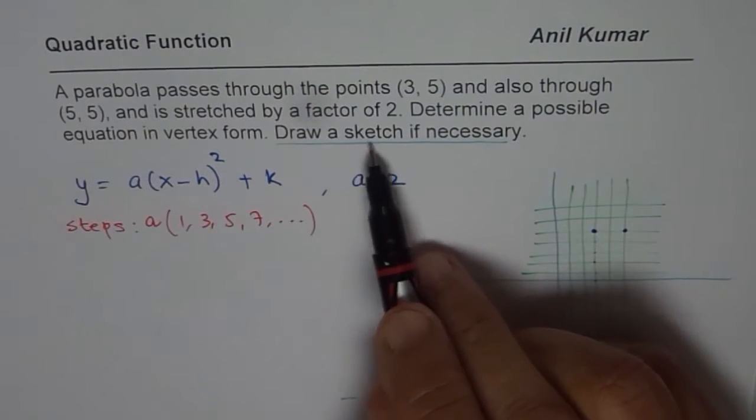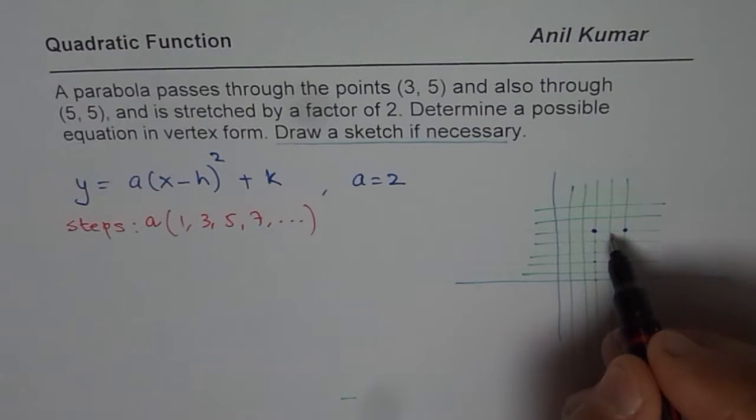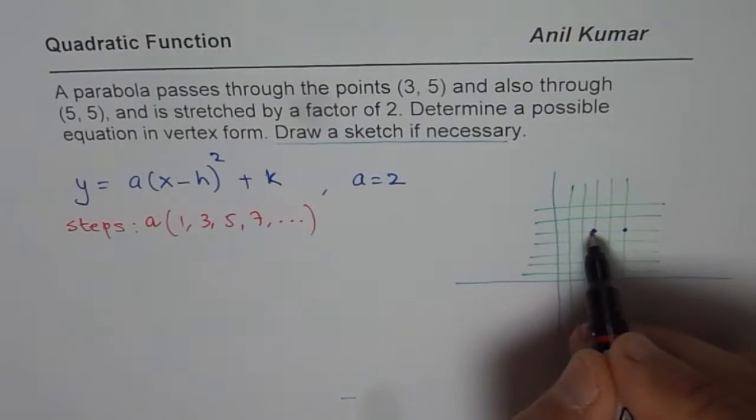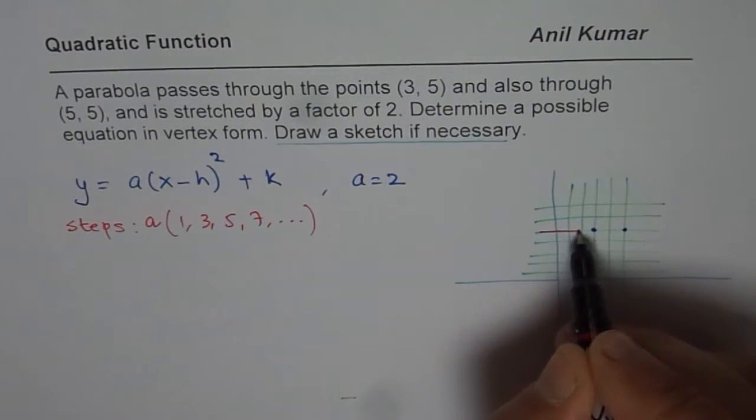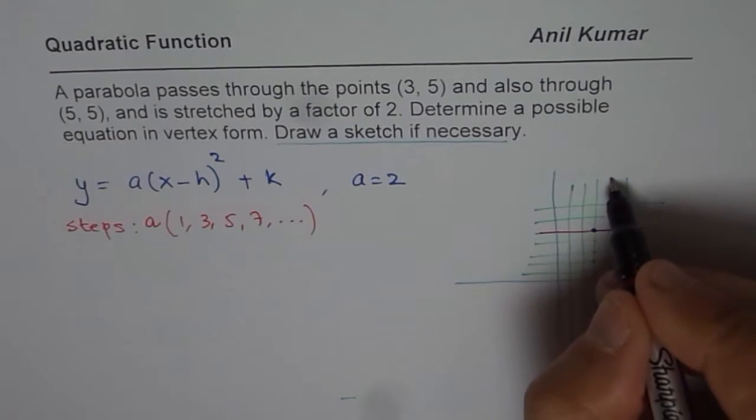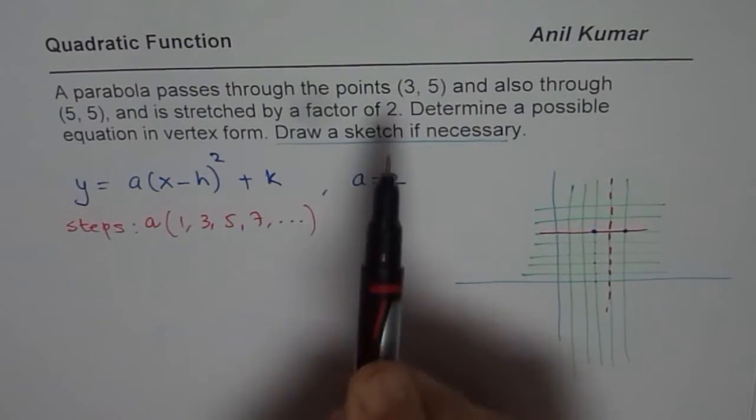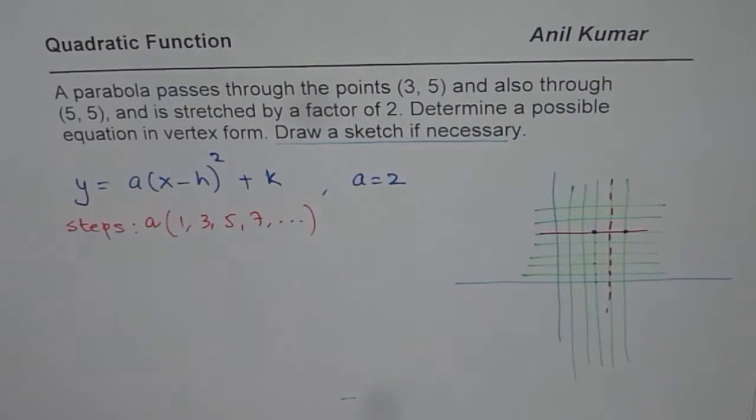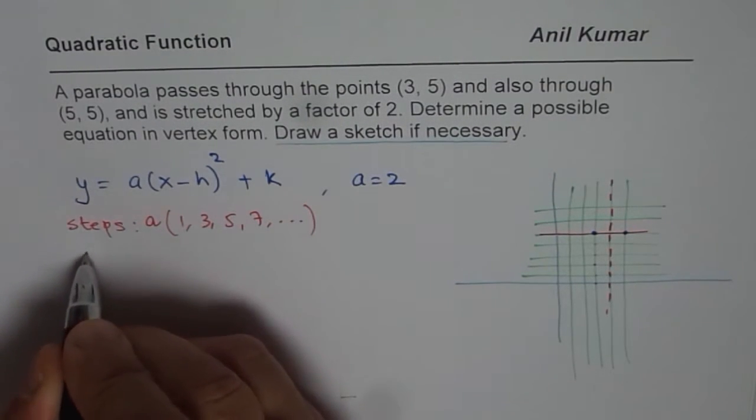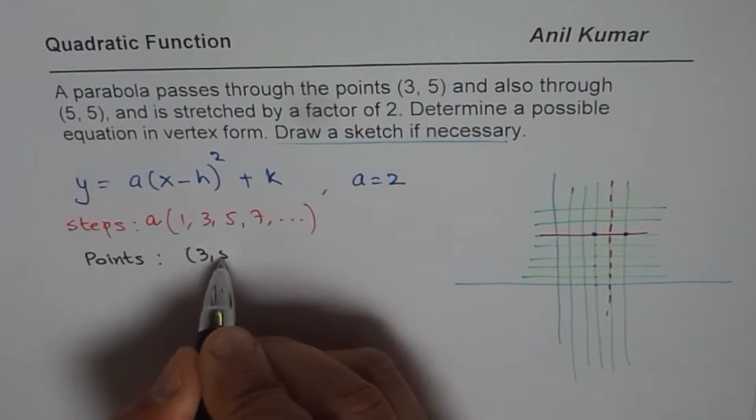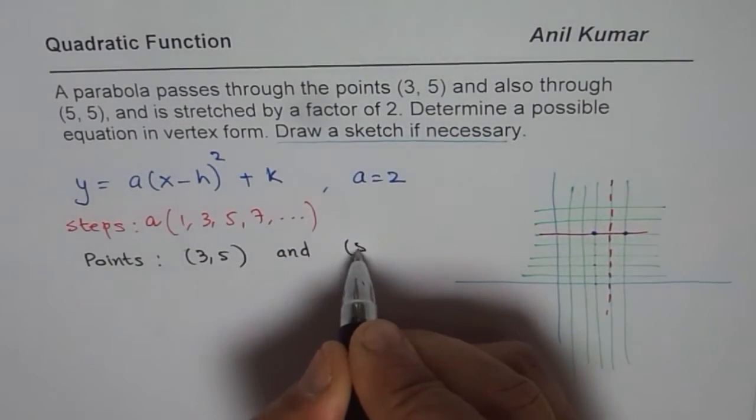So, basically what we can do is, this graph could have a maximum or a minimum, right? So, it could open like this or it could go like this. Okay. Since we are saying stretch factor, let us assume that we need to find the peak and which is 1 unit away. How do we know that? We know it because these two points given to us are at the same level. So, they are at the same level. Do you see that?